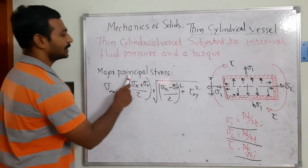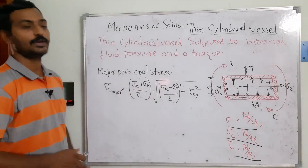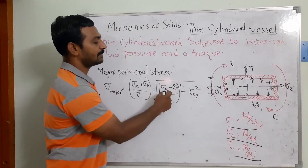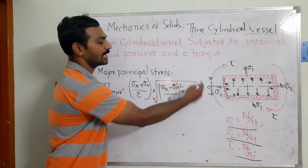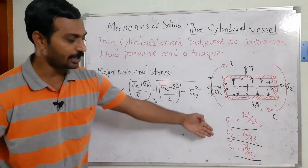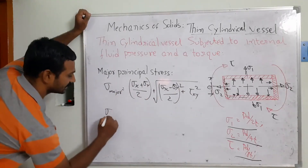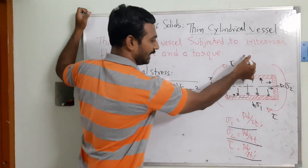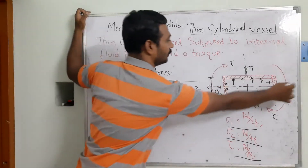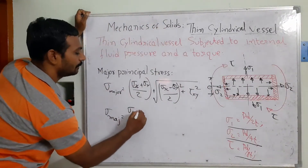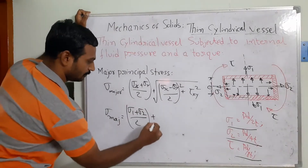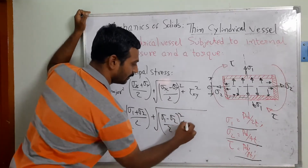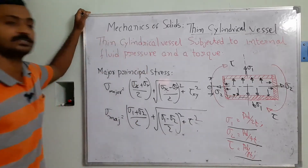The major principal stress equation, derived in a previous lecture, is: σ_major = (σx + σy)/2 + √[(σx − σy)²/4 + τxy²]. Modifying this for our condition, we replace σx and σy with σ1 and σ2, giving: σ_major = (σ1 + σ2)/2 + √[(σ1 − σ2)²/4 + τ²].